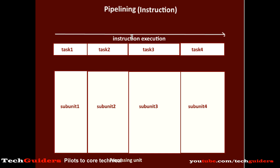We know that the instruction execution process consists of sub-processes or phases such as fetch phase, decode phase, execute and write back phase. The number of phases may vary; we shall consider 4 phases: fetch, decode, execute and write back.